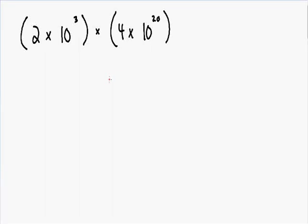Hey everybody. Welcome to my video on multiplying and dividing in scientific notation. So here we have 2 times 10 to the third multiplied by 4 times 10 to the twentieth.